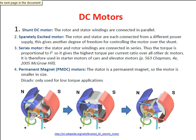The series motor is therefore used in starter motors of cars and elevators. Permanent magnet motors have a permanent magnet stator, so the motor is smaller in size. This advantage means they are only used for low-power applications.